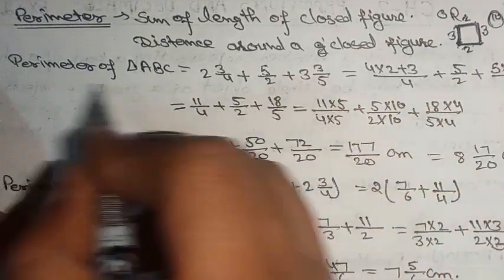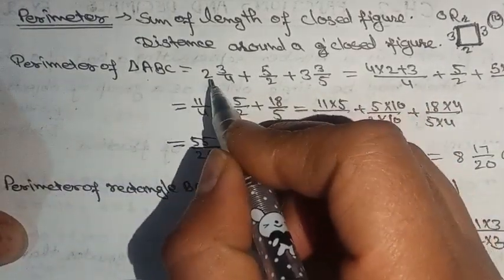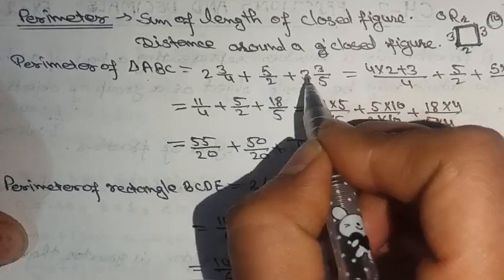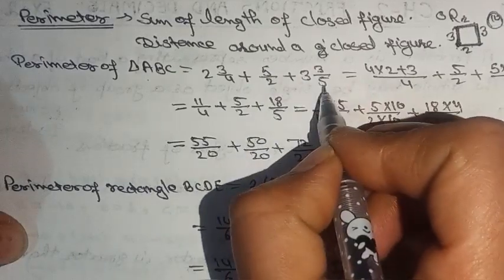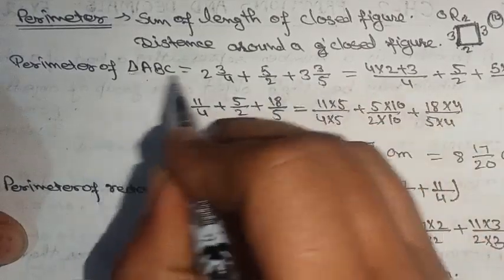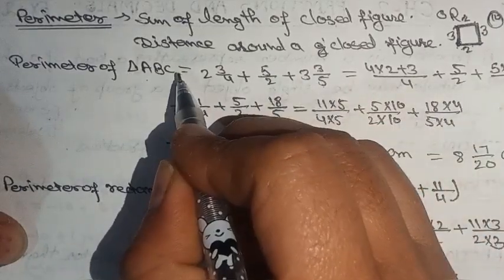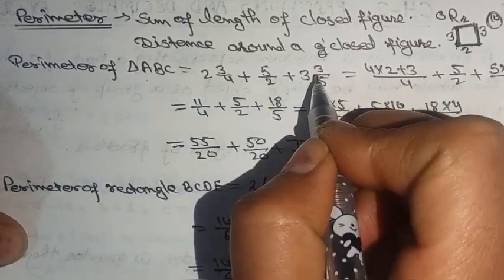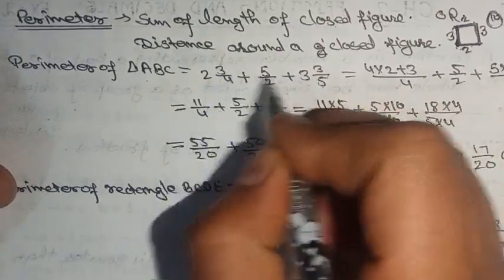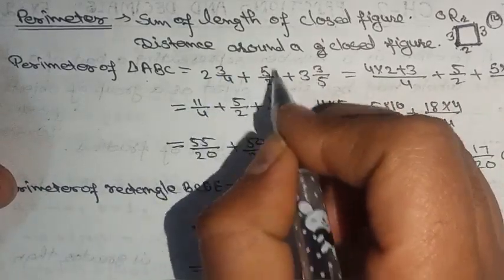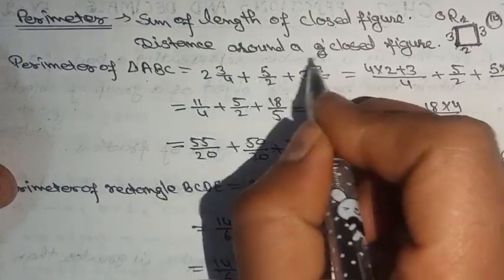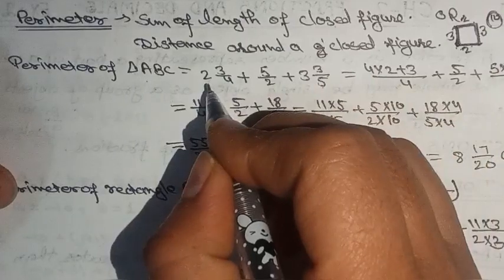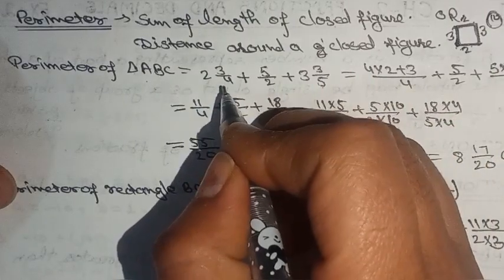Now for our triangle, the sides are 2 and 3/4, 5/2, and 3 and 3/5. These are mixed fractions, so we need to convert them to improper fractions before adding.